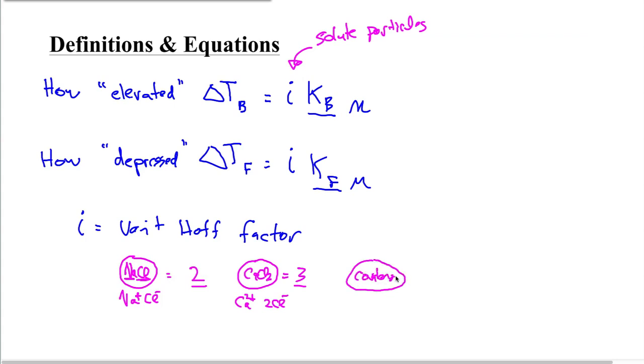So this I is really just the solute particles, or you can think about it as moles of solute particles. Now an interesting thing happens when you have covalent compounds. Anything covalent, so that could be like carbon dioxide or even glucose. The van't Hoff factor, or I, is always 1, because it doesn't break up when you put it in water like ionic compounds do. So just pay attention to that.